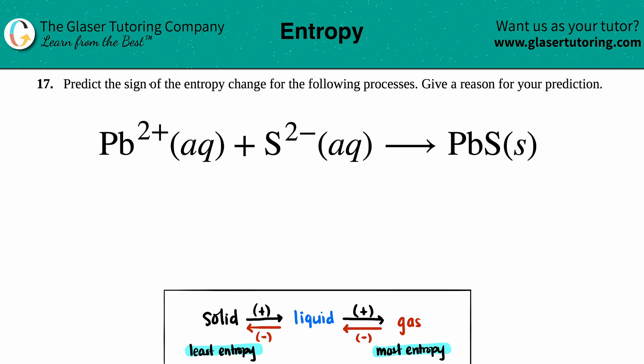Number 17: Predict the sign of the entropy change for the following processes and give a reason for your prediction. Okay, so in this case we have a balanced equation: Pb²⁺(aq) + S²⁻(aq) → PbS(s).